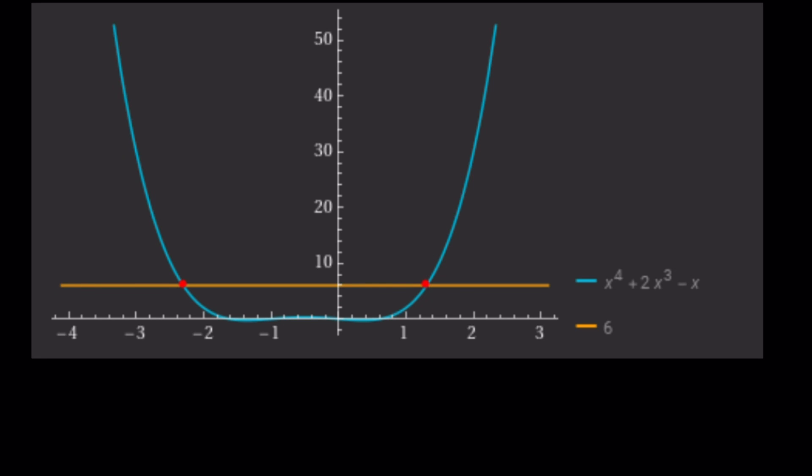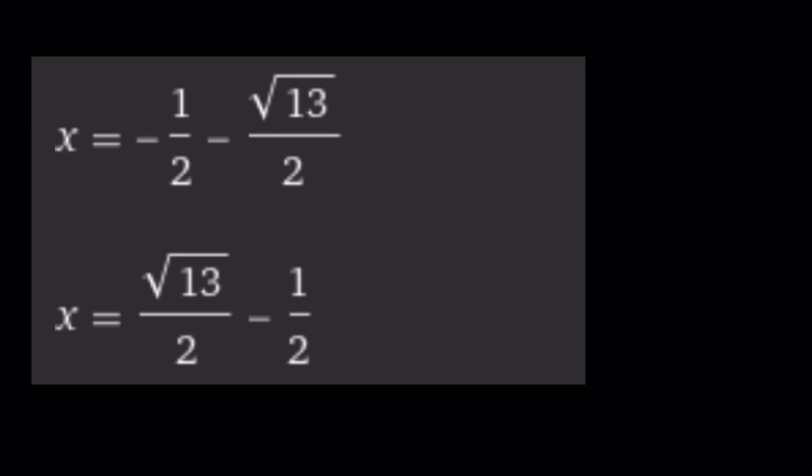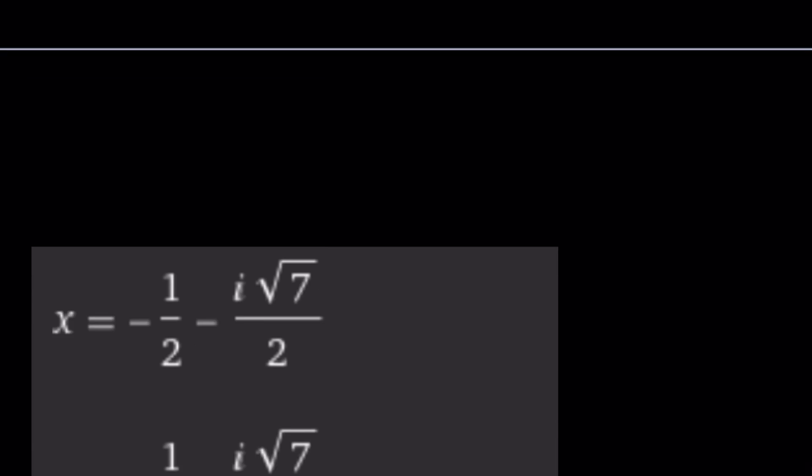So here's the graph of x to the fourth plus 2x cubed minus x. And the horizontal line y equals 6. As you can see, the orange one. And they intersect at two points, which we found. Those are the real solutions. The complex solutions are not shown because you can't see them. They are complex. And here's the verification of the real solutions from Wolfram Alpha. They should look familiar. And the complex solutions from Wolfram Alpha. And this brings us to the end of this video.